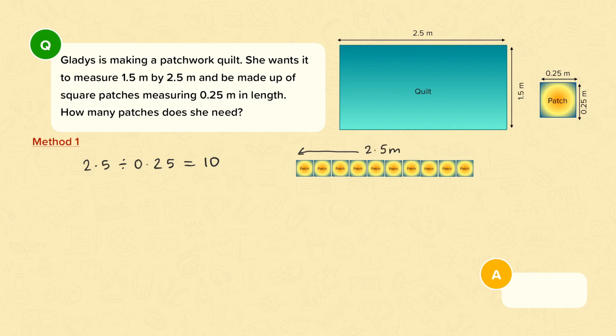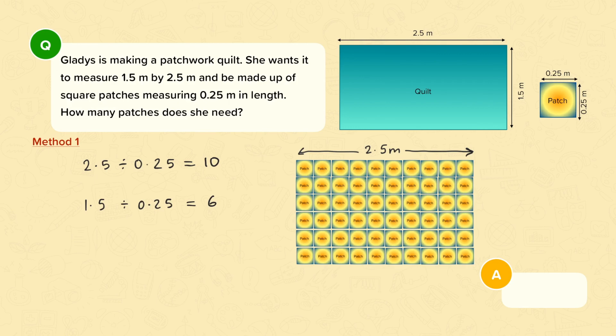If we do the same thing for the width of the quilt we want to know how many 0.25s fit into 1.5. So I can do 1.5 divided by 0.25 and that tells me that 6 patches will fit along the width of the quilt. So that means to make the quilt I will need 10 lots of 6 patches, which is 10 times 6. So the answer is 60 patches.